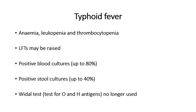Blood cultures tend to be positive in about 50 to 75% of patients, while stool cultures tend to be positive in a lower amount — up to 40%. You can also culture the rose spots, which are those skin lesions, and they will also turn positive for Salmonella itself. Widal's test was previously designed to test for the O and H antigens of the lipopolysaccharide of the organism, but it's a rather unreliable test and is not used in practice.